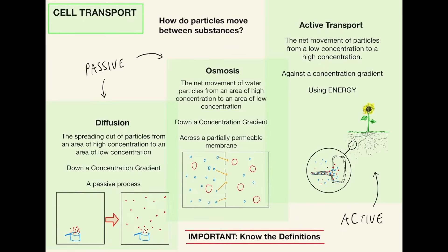Once the plant root has absorbed a certain amount of water and nutrients, the concentration in the soil becomes lower, but the plant doesn't want to waste those nutrients, so active transport occurs — the plant root uses energy to bring in the remaining nutrients and water particles. There are many uses of osmosis and diffusion in the body: for example, gas exchange in the lungs is an example of diffusion, and in the large intestine when water is absorbed from food into the blood, that is an example of osmosis.